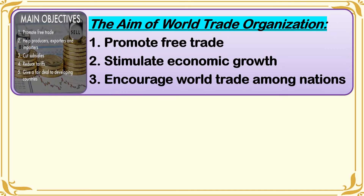Let us discuss about the aims of the World Trade Organization. The first one is to promote free trade. The second one is to stimulate economic growth. And the third one is to encourage world trade among nations. The WTO promotes free trade among nations doing import and export of goods, stimulates economic growth especially for third world countries, and encourages world trade among nations to have a close-knit relationship.